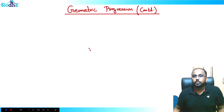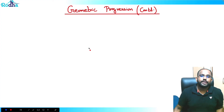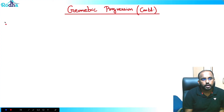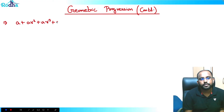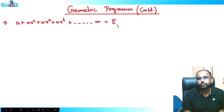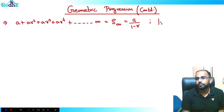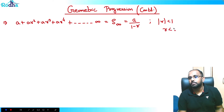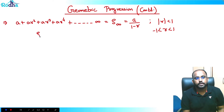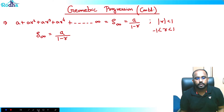Let's continue Geometric Progression. Yesterday we saw the sum of n terms of GP, so now we can also see a formula for the sum of infinite terms in GP. For example, if we have a + ar + ar² + ar³ + ar⁴ and this goes to infinity, this is called the sum of infinite terms of GP. It is given by S∞ = a / (1 - r).